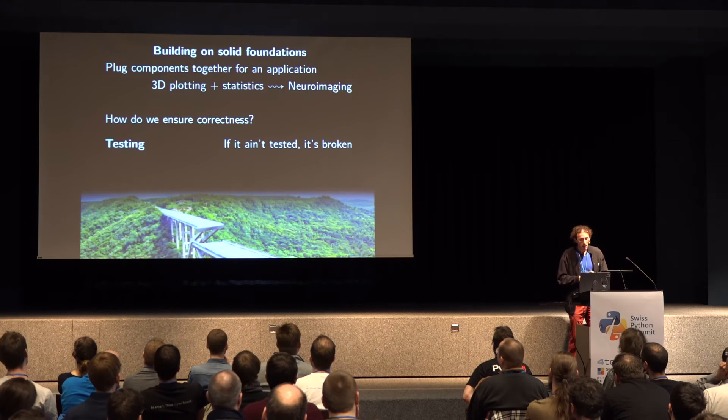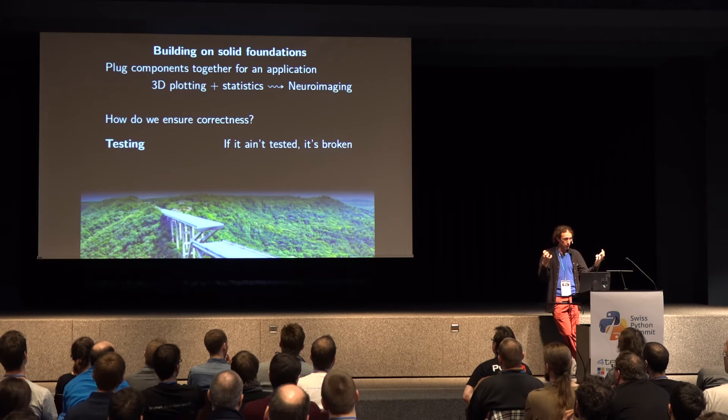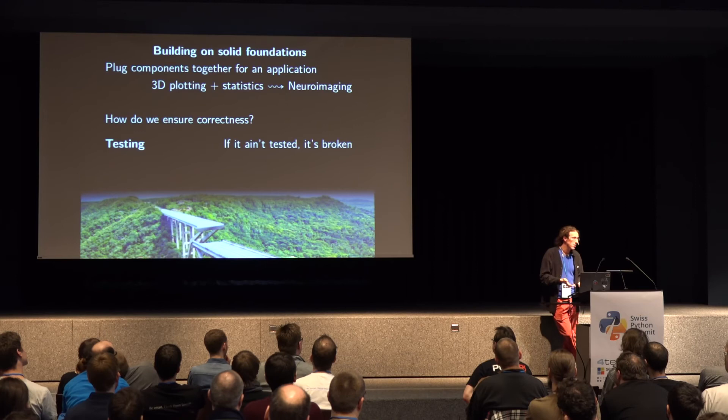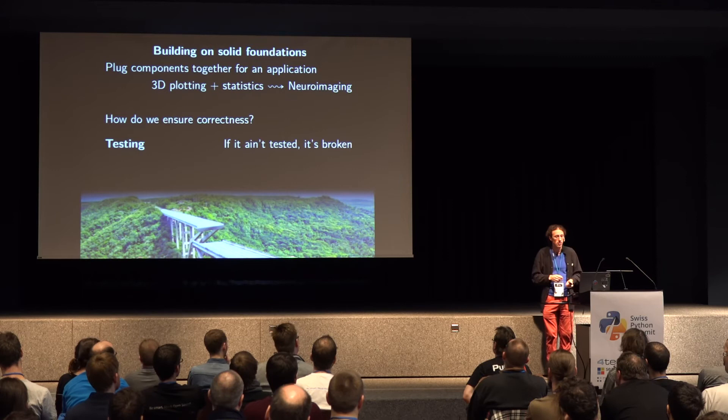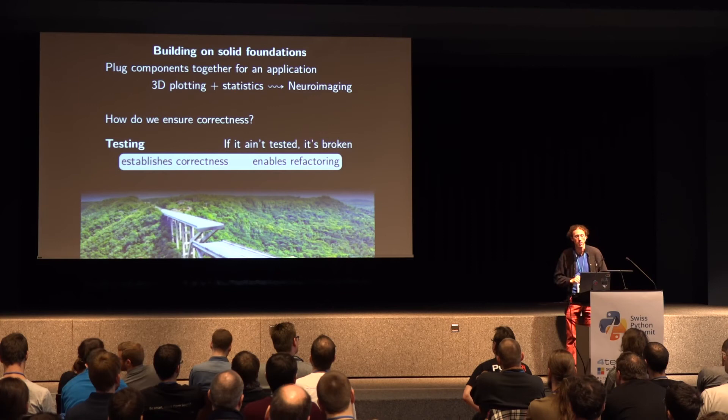We want to build on solid foundations, which means splitting different libraries apart so each has a specific function — for example, 3D plotting on one side and statistics on the other, combined to do 3D imaging of brains. Once things are well separated, testing is crucial — it establishes correctness but also enables refactoring, and that's what avoids a library collapsing in the long run.